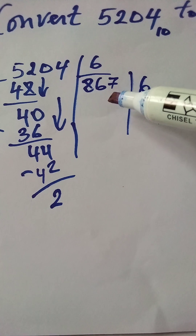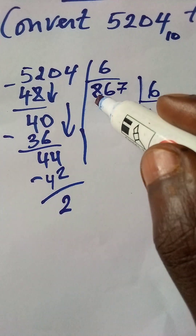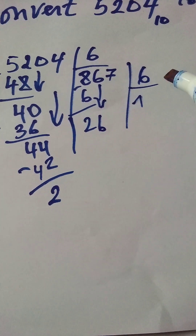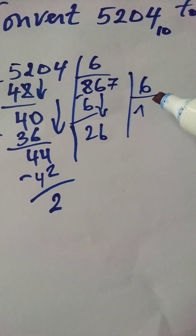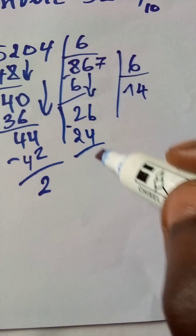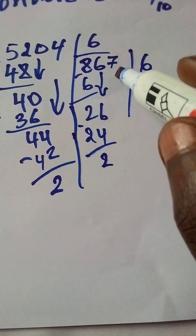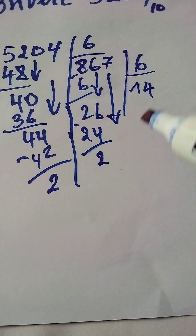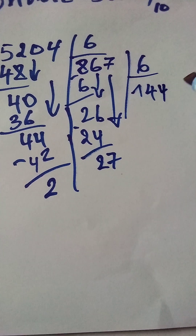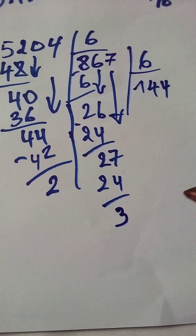We now have 867 divided by 6. Then 8 divided by 6 — we put 1. 1 times 6 is 6, and 8 minus 6 is 2. Pull down the number 6, giving 26. Then 26 divided by 6 — we put 4. 4 times 6 is 24, and 26 minus 24 gives a remainder of 2. We pull down 7, giving 27. So we have 27 divided by 6 — we use 4 again. 4 times 6, the answer is 24, and we have a remainder of 3.